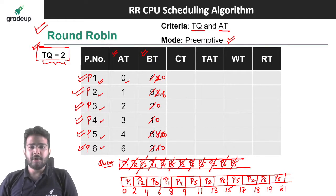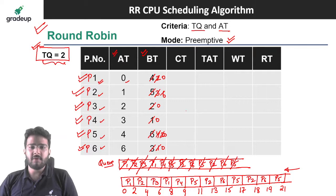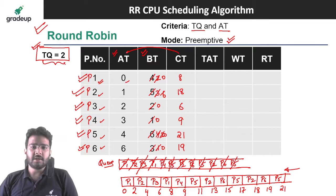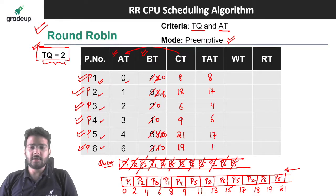Now from the Gantt chart we can write the completion times — scan from the right-hand side since it is preemptive. Completion time of P1 is 8, P2 is 18, P3 is 6, P4 is 9, P5 is 21, and P6 is 19. Turnaround time is completion time minus arrival time: P1 = 8, P2 = 17, P3 = 4, P4 = 6, P5 = 17, P6 = 13.